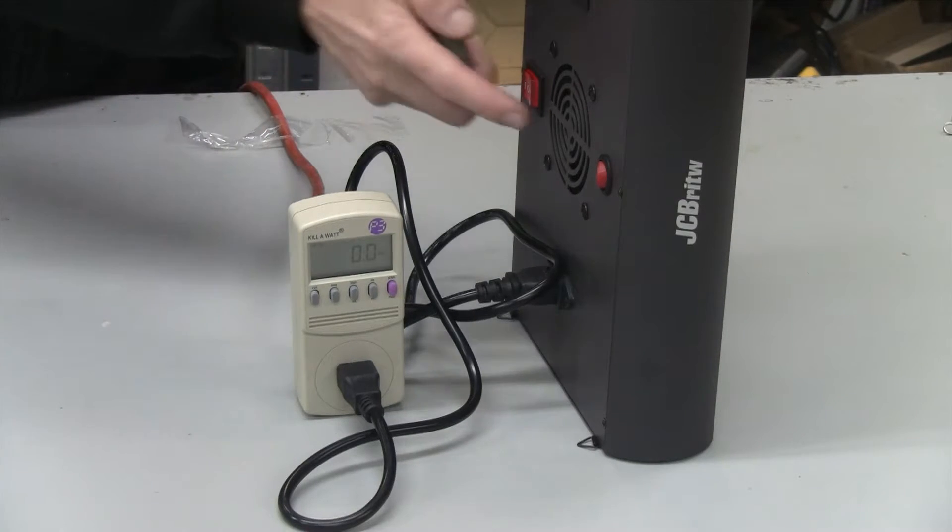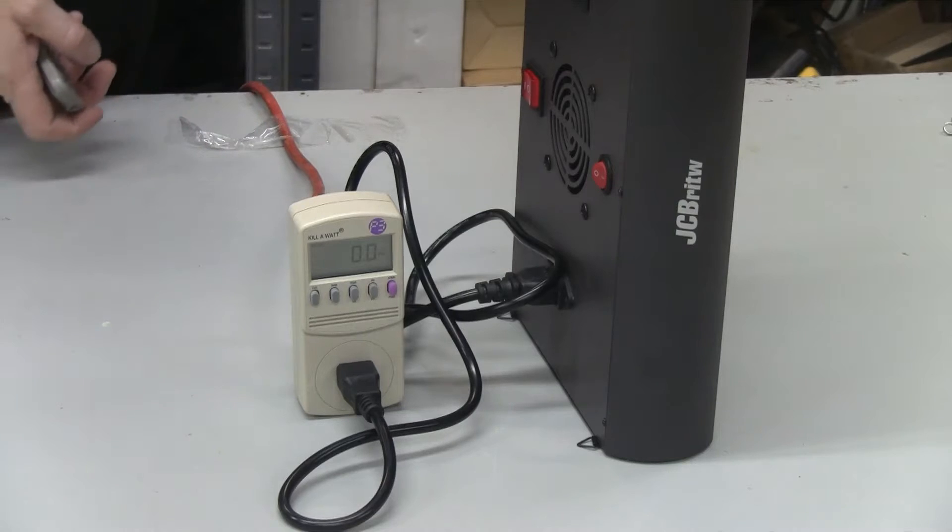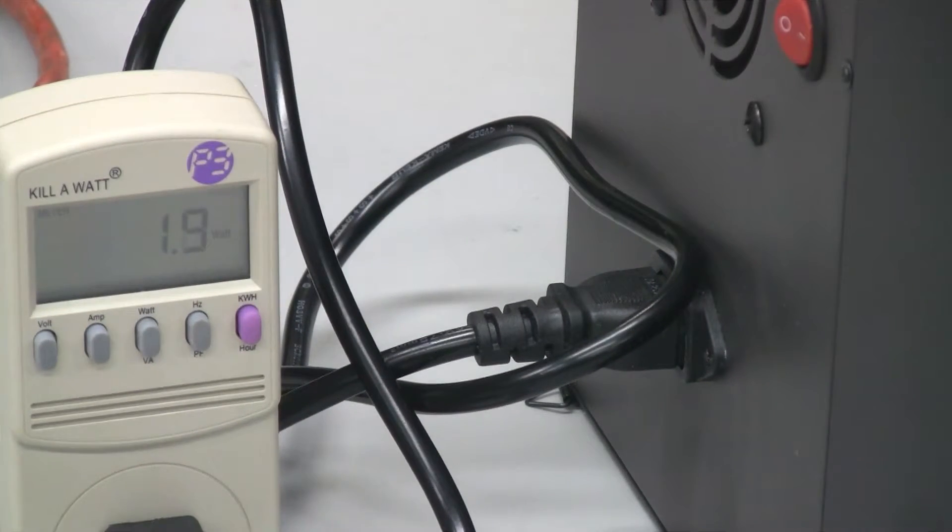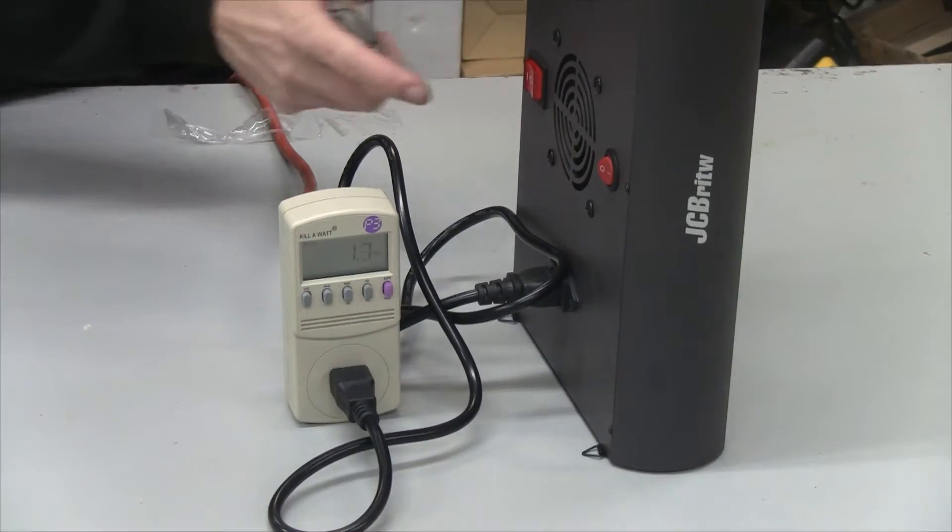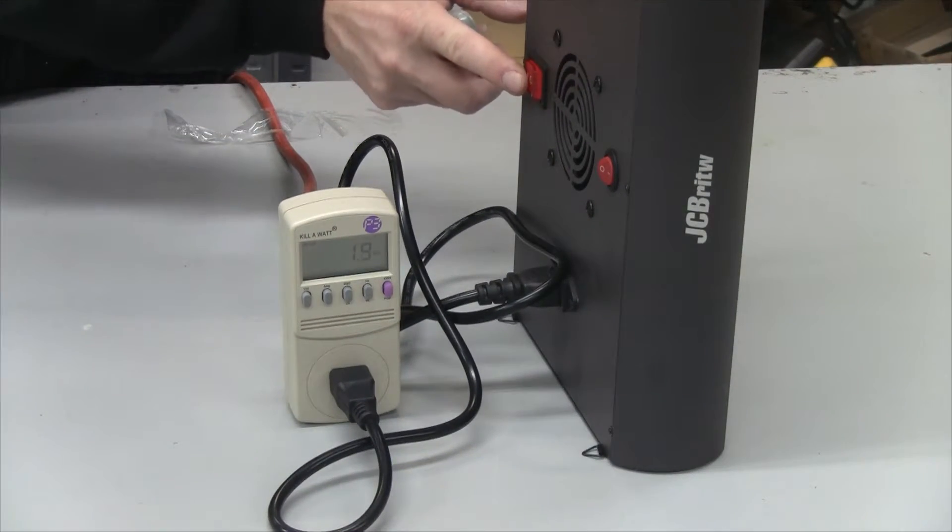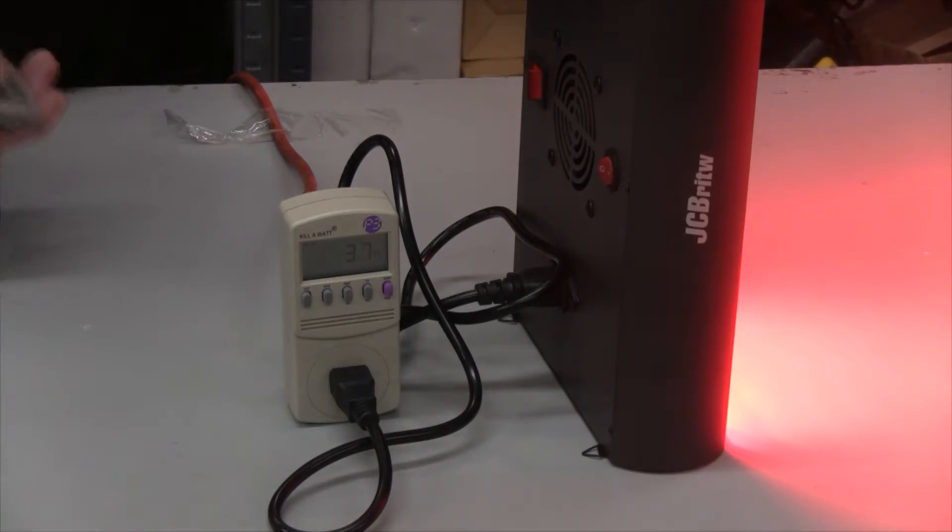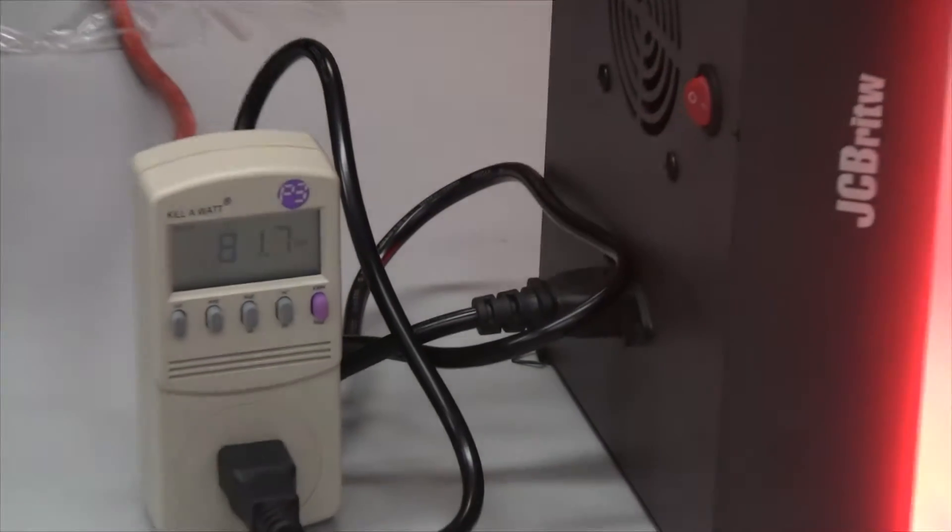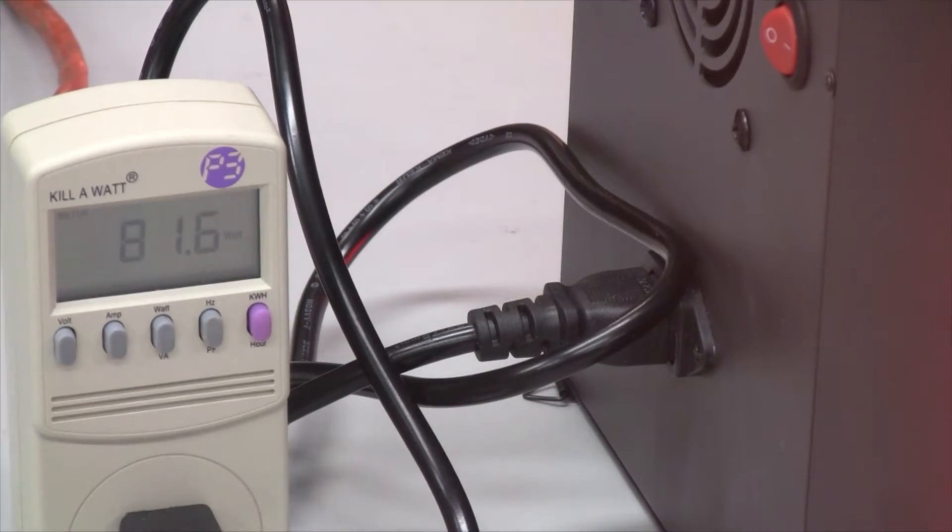Now we're going to test out the wattage. This is the main power switch, and this is a kilowatt meter. We're going to zoom in here and see what that comes out to be. Looks about 1.8 watts just for the fan alone. I'll zoom back out and we'll put it on bloom. That's that bright red light. Zoom in, and that looks about 82 watts or so.